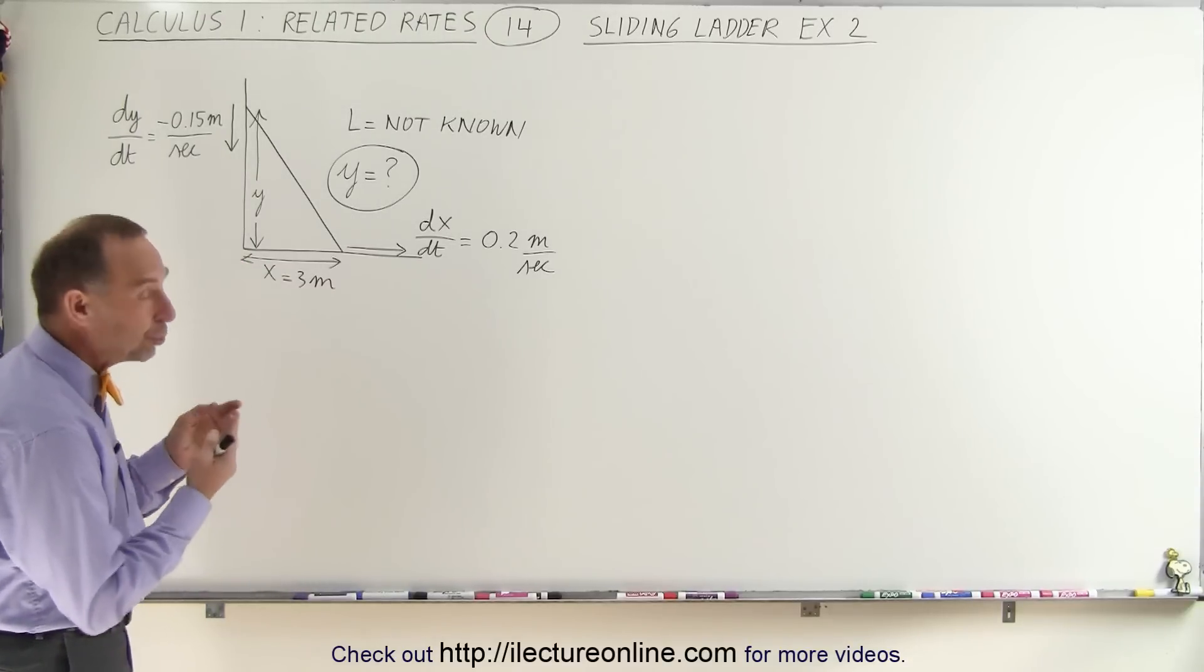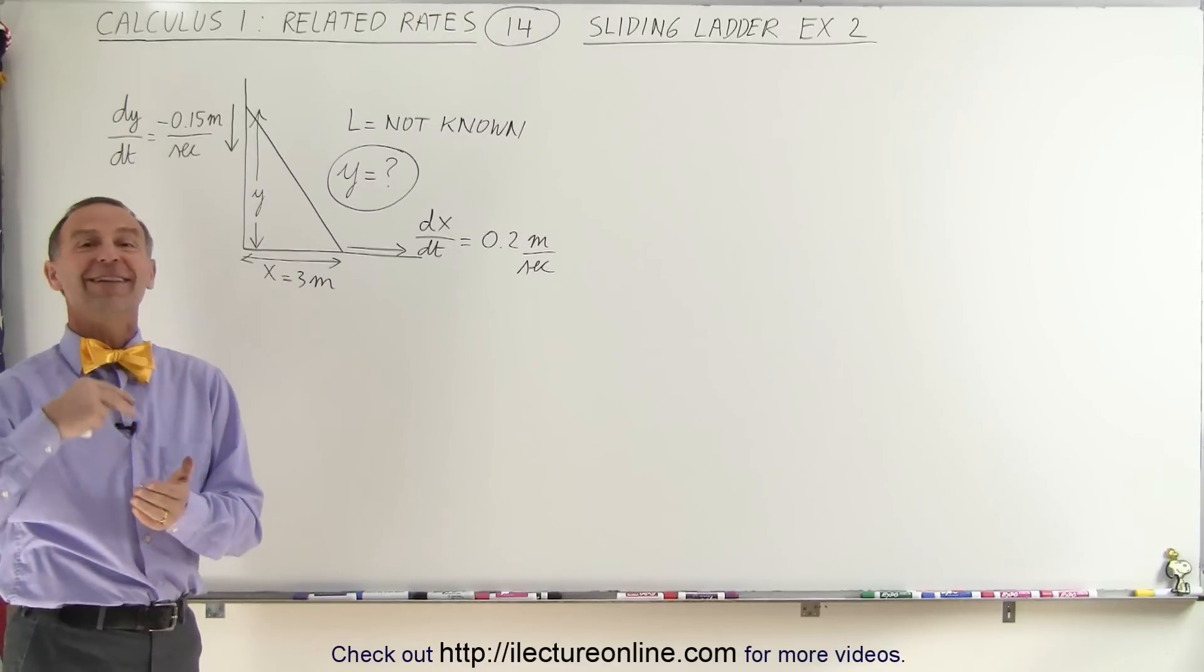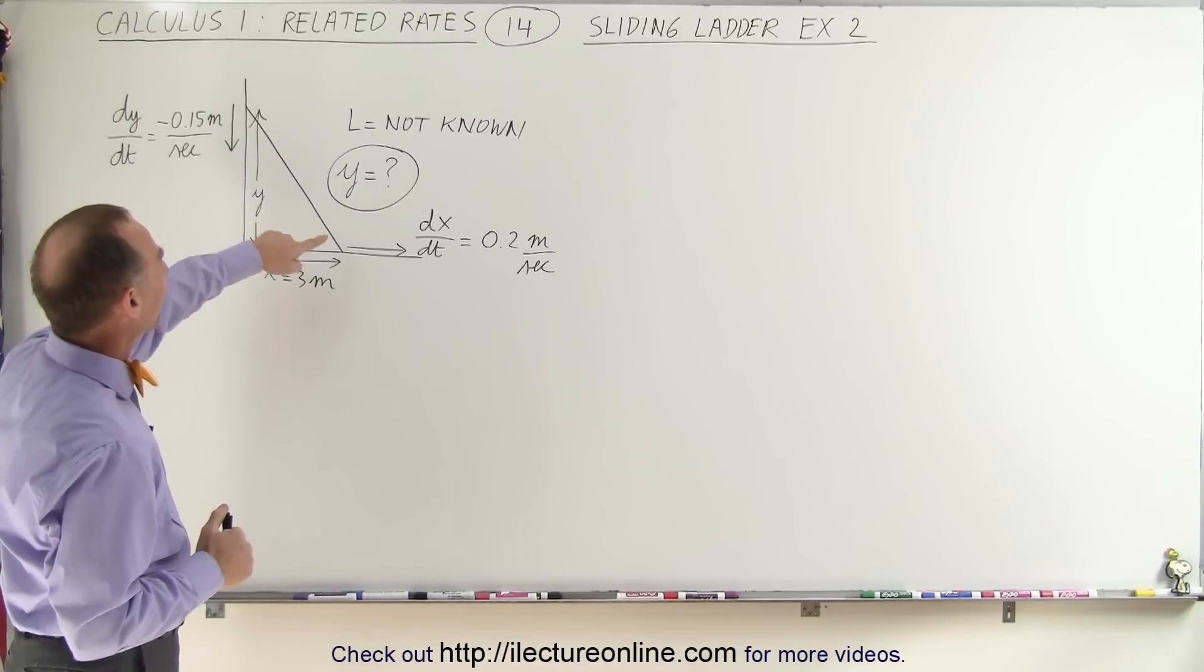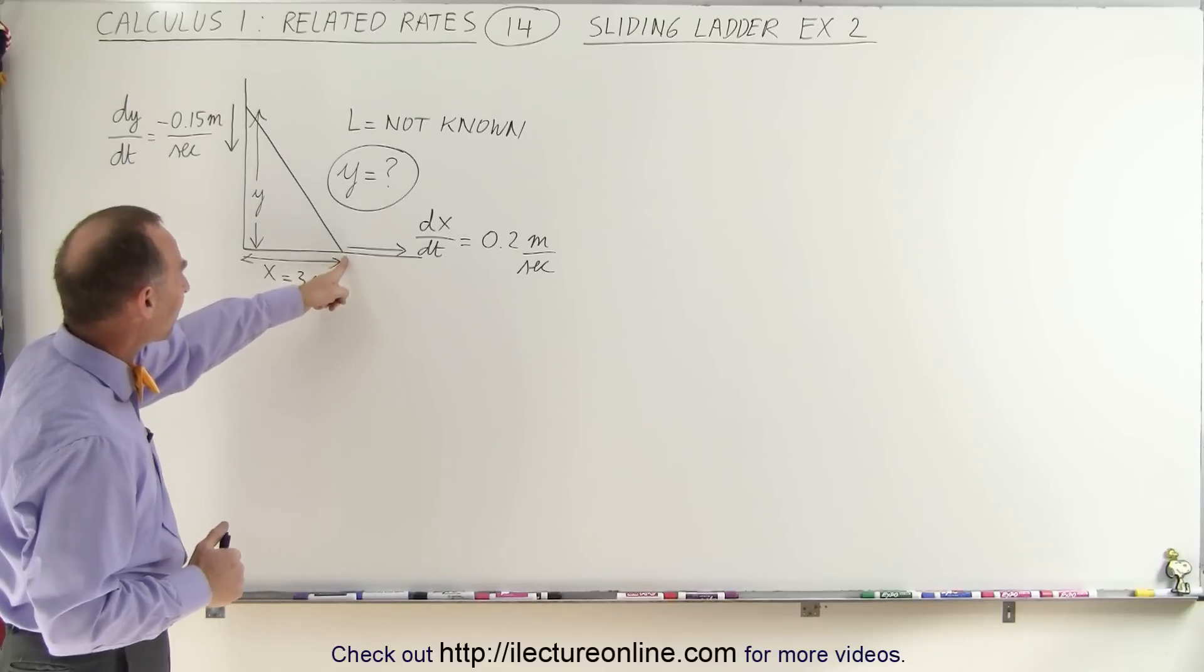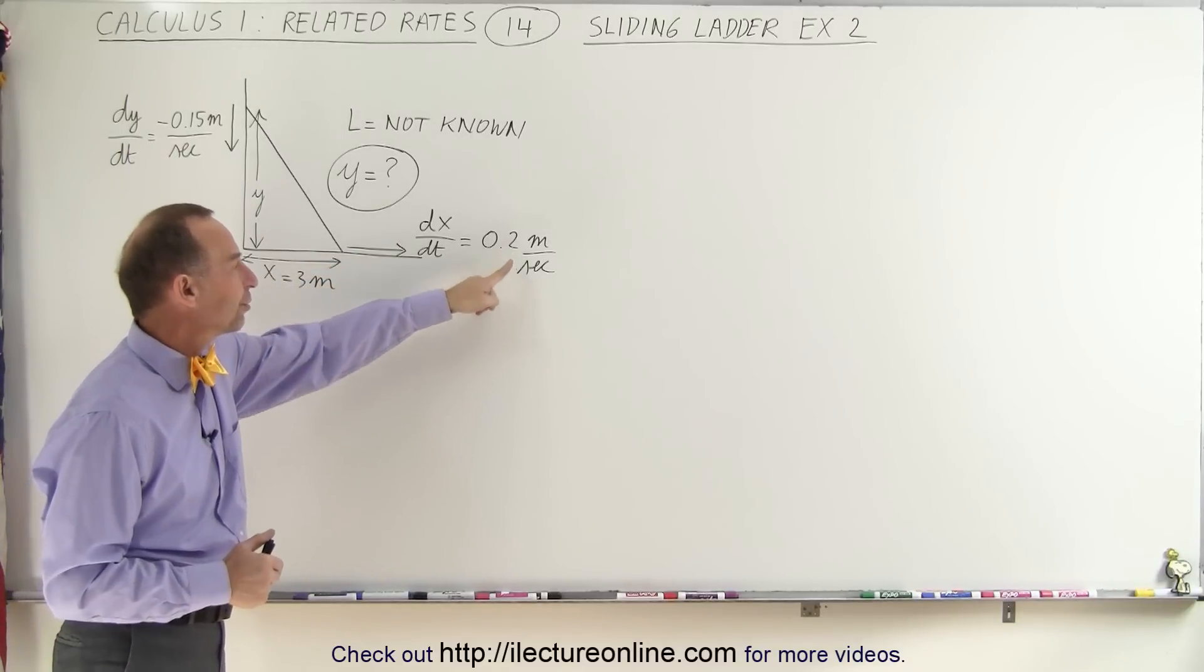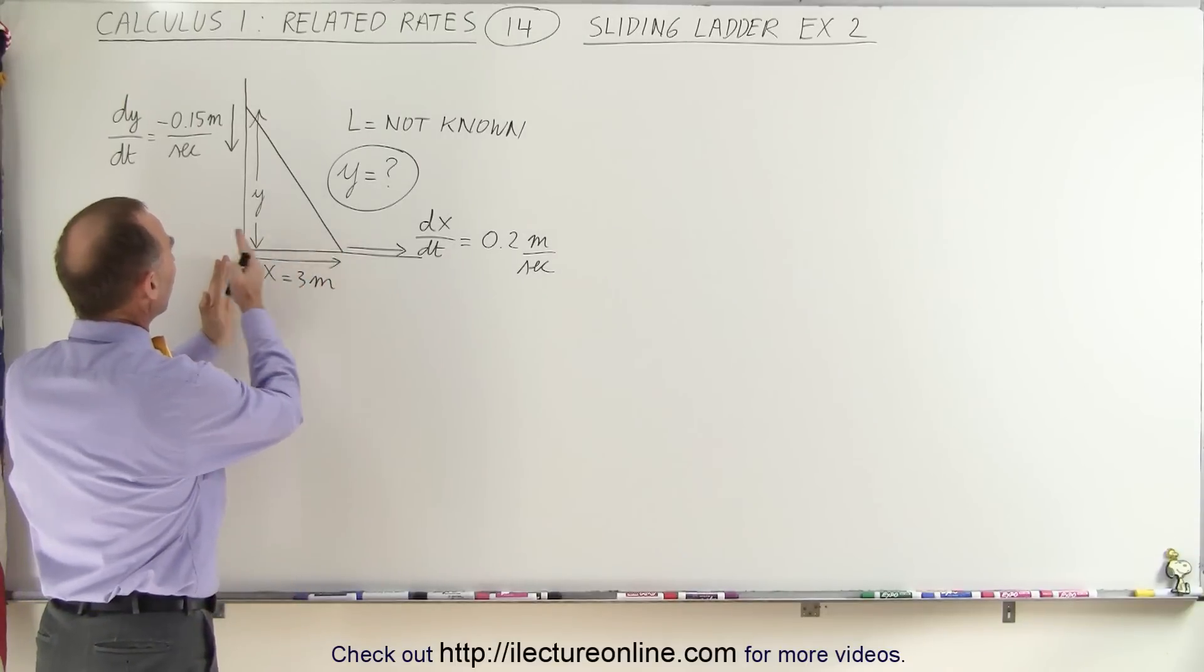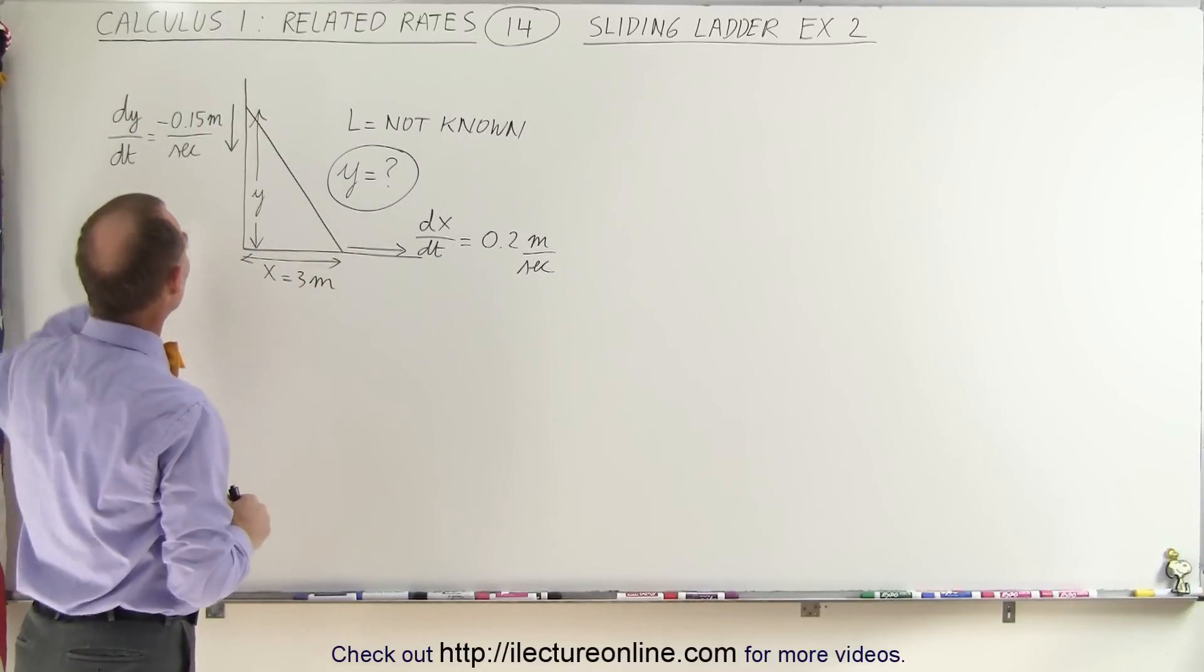Now in this case, we do not know the length of the ladder. We are told that the bottom of the ladder is sliding across the floor at a rate of 0.2 meters per second at the moment that the distance from the wall is 3 meters.